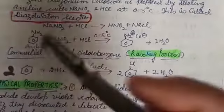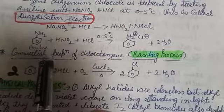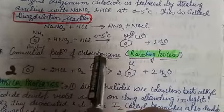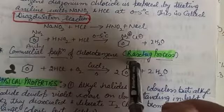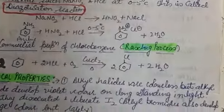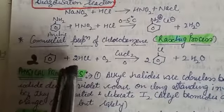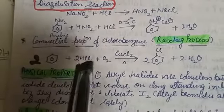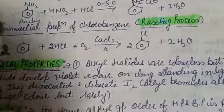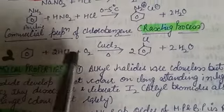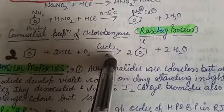Now, the last method of preparation is the Raschig process, used to make chlorobenzene. In this process, we add HCl plus oxygen in the presence of copper chloride catalyst. So: benzene plus HCl plus O₂, in the presence of copper chloride.